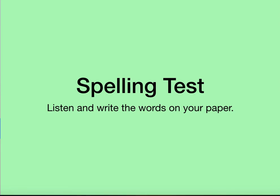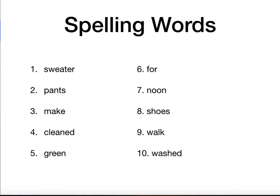How did you do? You can check your work by looking at the words — the numbers are different so do not look at the numbers, but check your spelling. Sweater was number one, pants two, shoes three, noon four, walk five, washed six, make seven, cleaned eight, green nine, and four was ten.